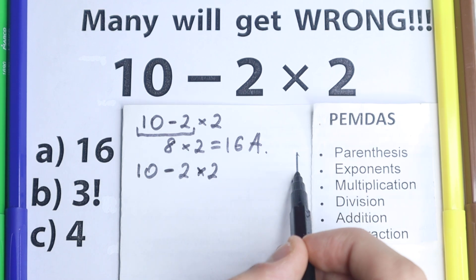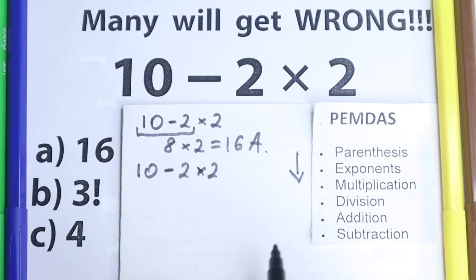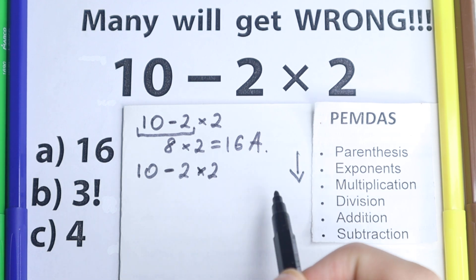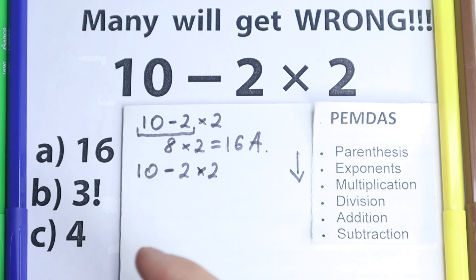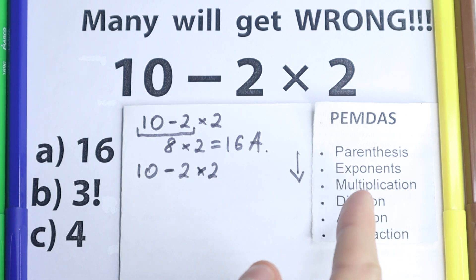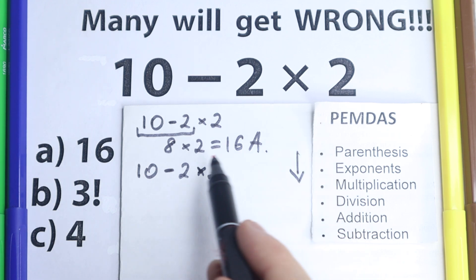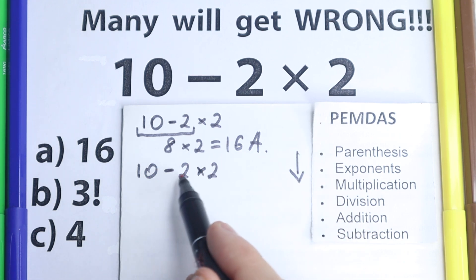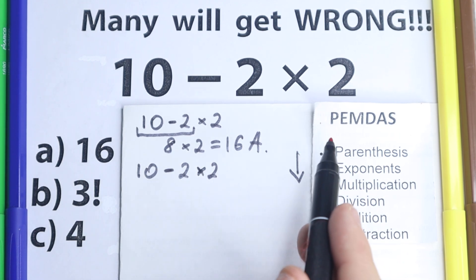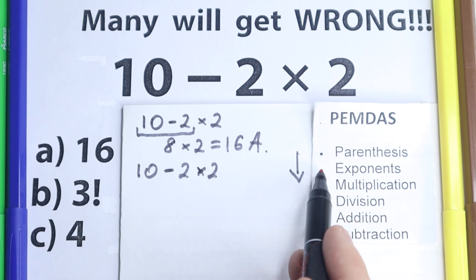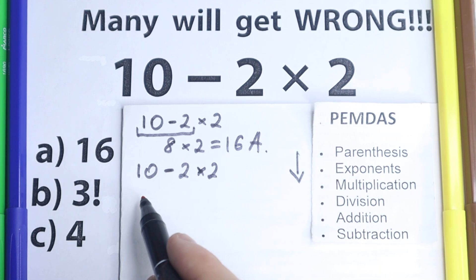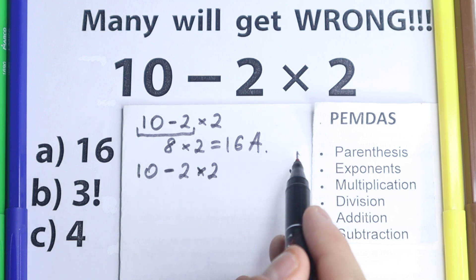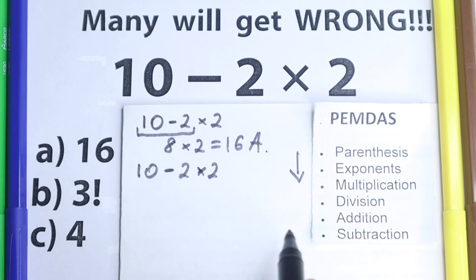PEMDAS works from the top to the bottom. Let's spend 30 seconds to solve it correctly. First of all we have Parentheses — are there any parentheses here? No, I don't see any of those. What about the next step? Exponents — are there any squares or cubes here? No, I don't see any of those either.